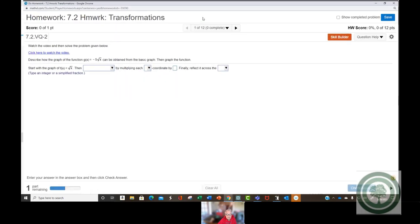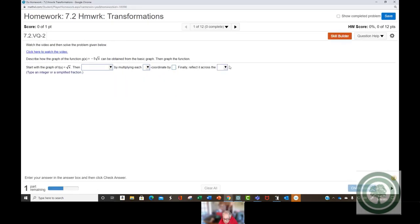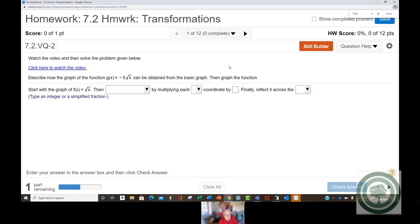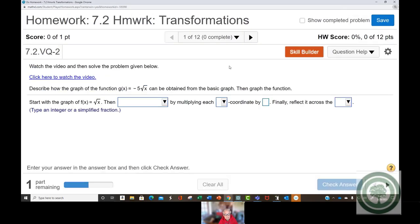So now, I'm going to try to make this bigger. Describe how the graph of the function g of x equals negative 5 times the square root of x can be obtained from the basic graph. Then graph the function. Okay. Start with the graph. They tell you what the basic graph is. Start with the graph of f of x equals the square root of x.